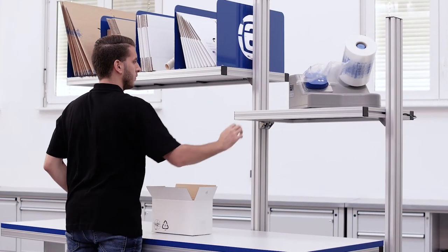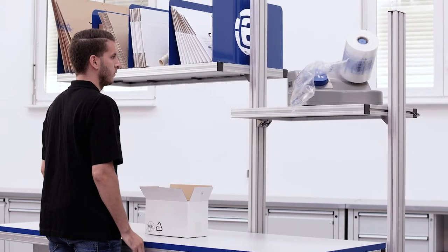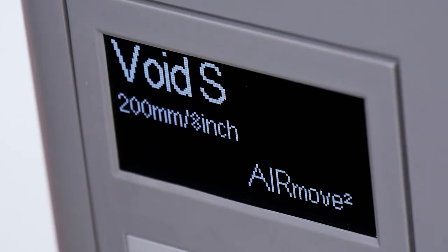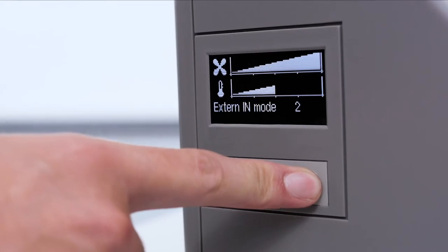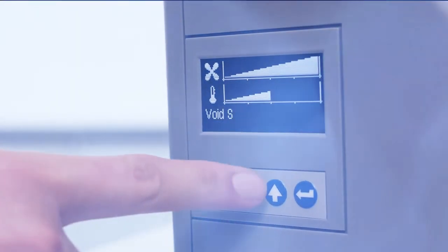AirMove 2 is fast and easy to set up. The clear display makes operation straightforward. The simple menu has a program for each kind of air cushion.